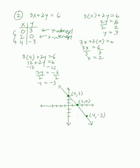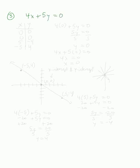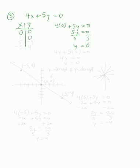Let's do another example — the next few will be a little bit different. Number 3: 4x plus 5y equals 0. Let's see what happens. If I put 0 for x, I get 4 times 0 plus 5y equals 0, or 5y equals 0. Divide by 5, I get y equals 0. If I put in 0 for y, I get 4x plus 5 times 0 equals 0, or 4x equals 0. Divide by 4, I get x equals 0 again. So (0, 0) appears to be both the x-intercept and the y-intercept.